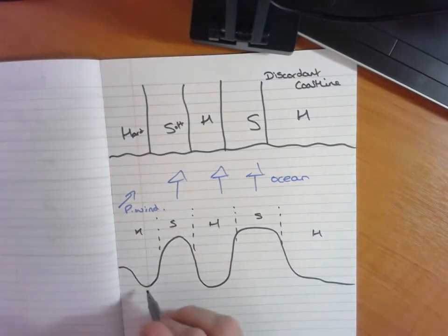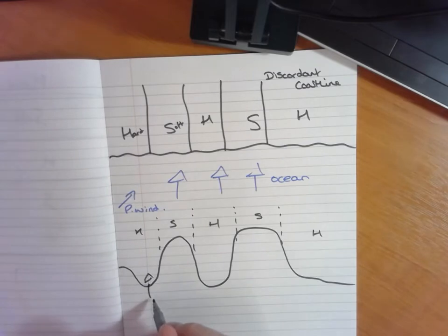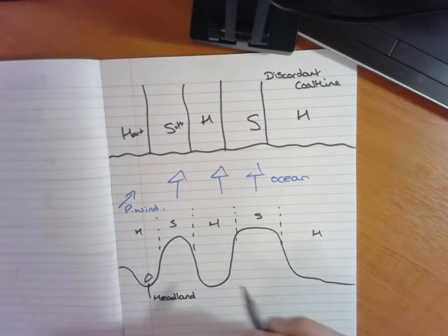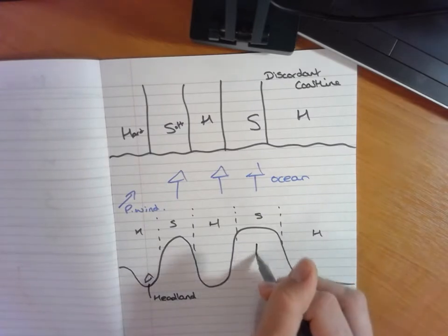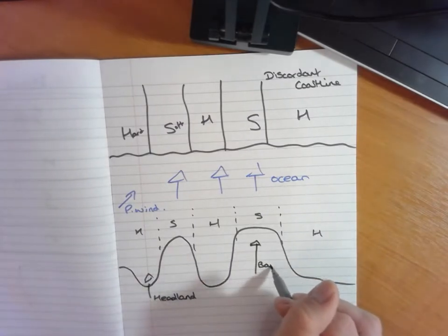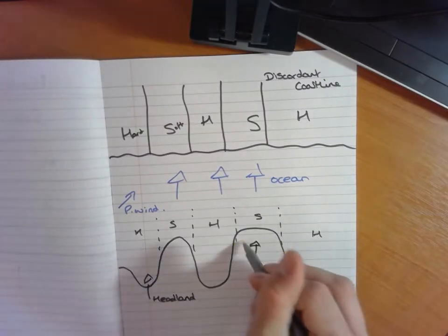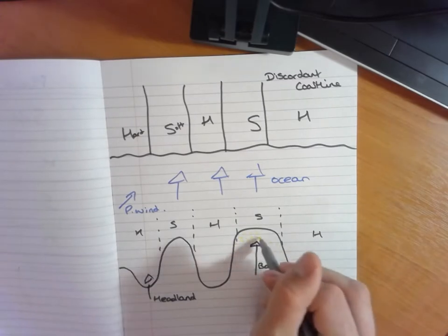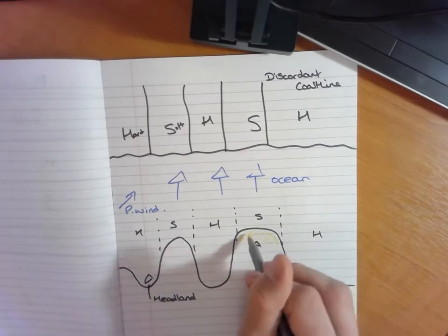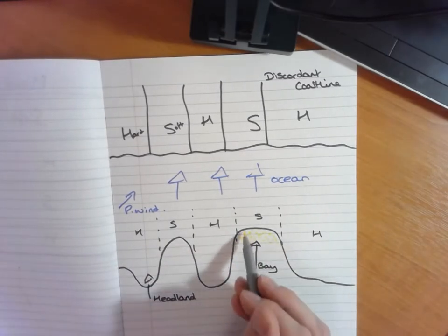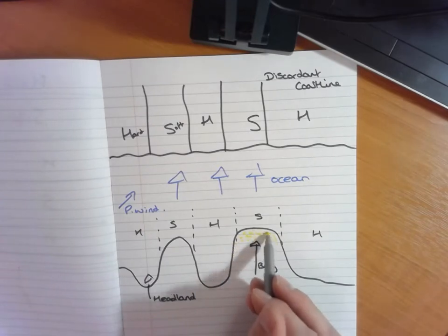One of the features that you can first label on is a headland, which we've talked about in previous lessons and on previous videos. Then you've got features such as a bay. And within a bay you then get depositional features such as beaches. So that is where the sediment has been eroded, normally from the headlands transported inland and creates our beaches.